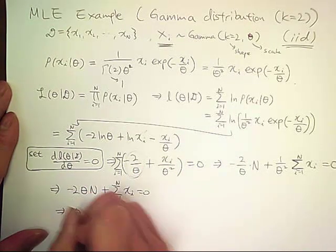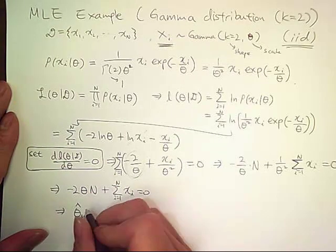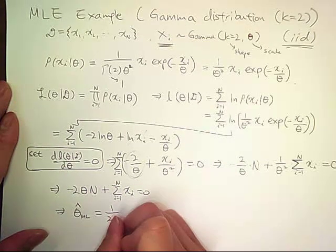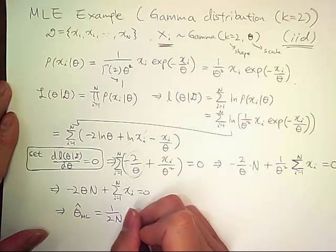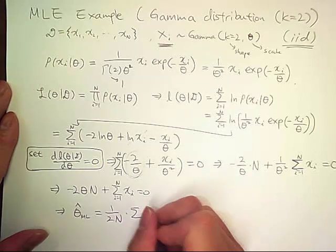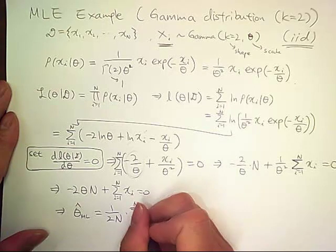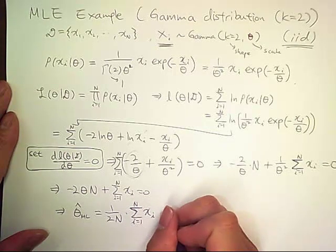the maximum likelihood estimate of theta is 1 over 2n times sum of x sub i from i equals 1 to n.